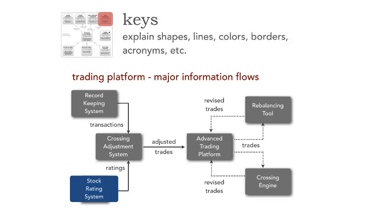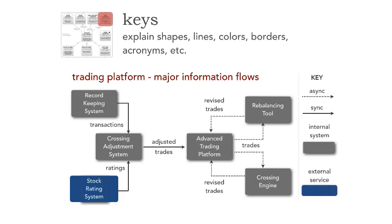We have one last tip — keys. Unfortunately, we have very few standards. How many of you can tell me why the stock rating system on the bottom left-hand corner is blue, has two bars across it, and why the dotted lines go between the advanced trading platform and the rebalancing tool and crossing engine? Very few people could. A key is absolutely necessary because we don't have standards — maybe within our team we understand that, but not for somebody else reading the architecture diagram. Now we can see the stock rating system is an external service, anything in gray is internal, solid lines are synchronous, and dotted lines are asynchronous.